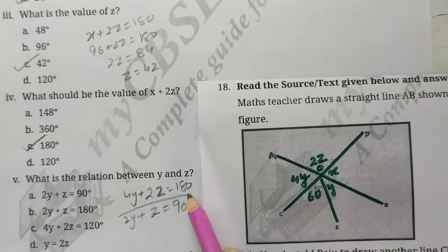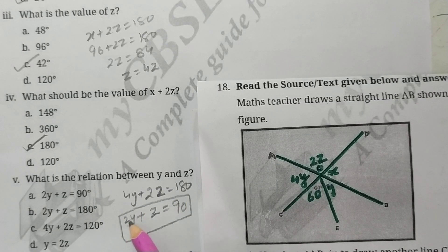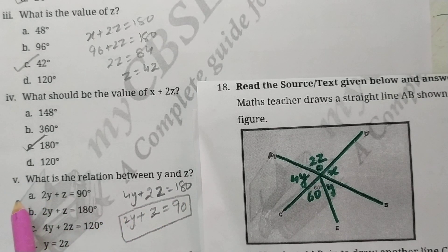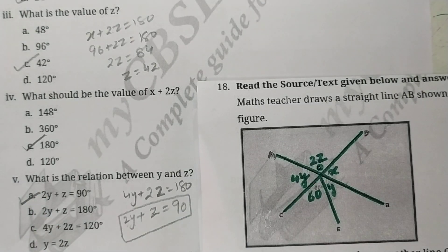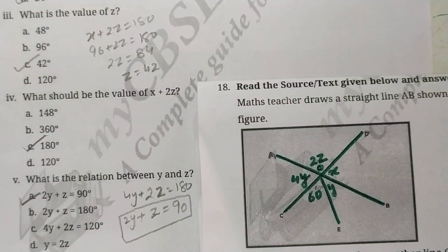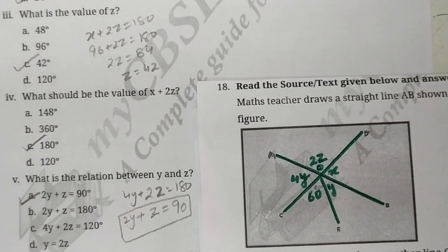So this is the relation between y and z: 2y plus z is equal to 90. So this is the right option. So I hope you understood this question which is based on Lines and Angles of class 9. So thank you so much.